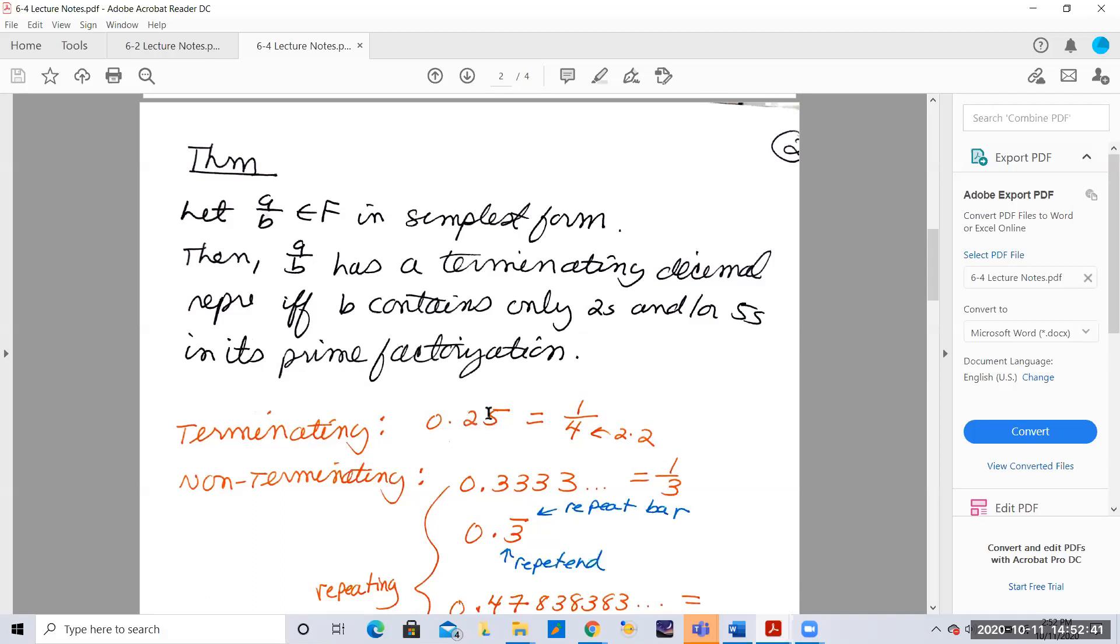So for example, 0.25, that terminates. That decimal terminates right there in the hundredths place. And 25 hundredths is the same as one-fourth. Notice the four, the bottom, has only twos as factors.